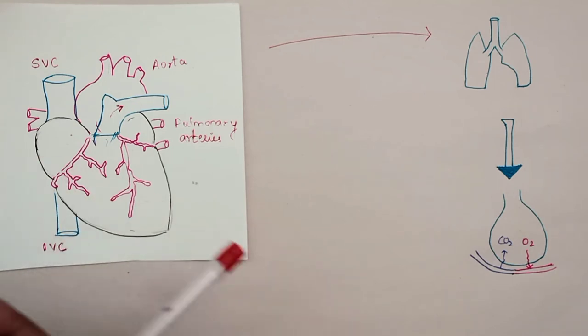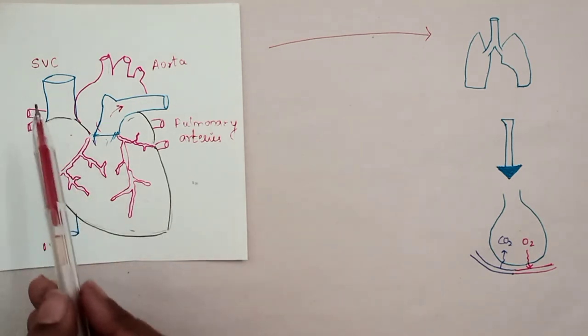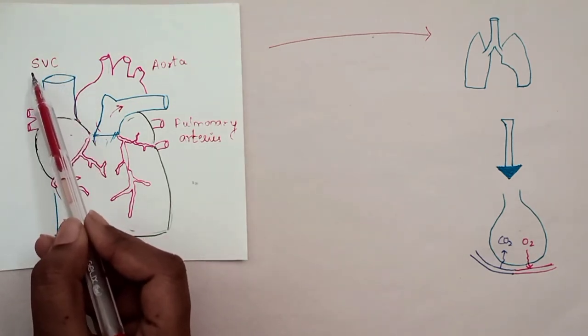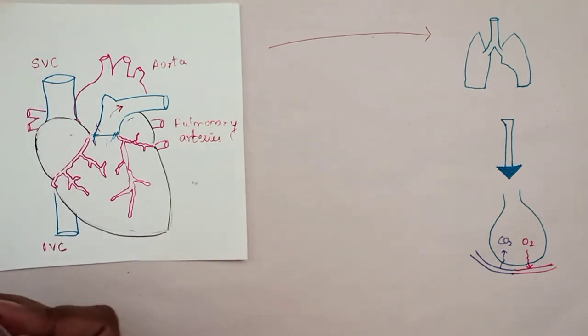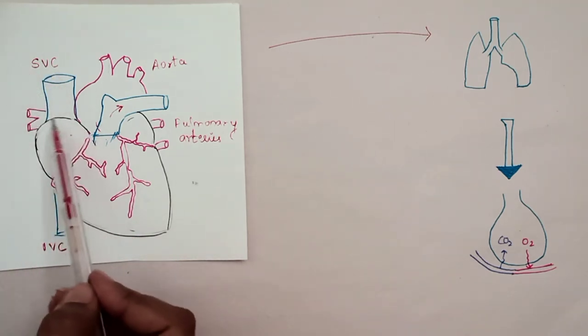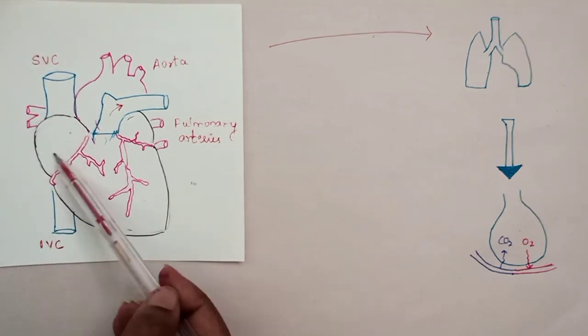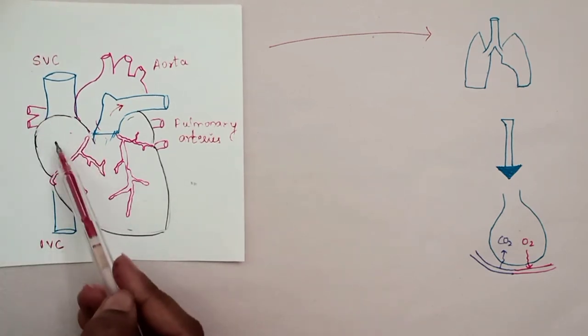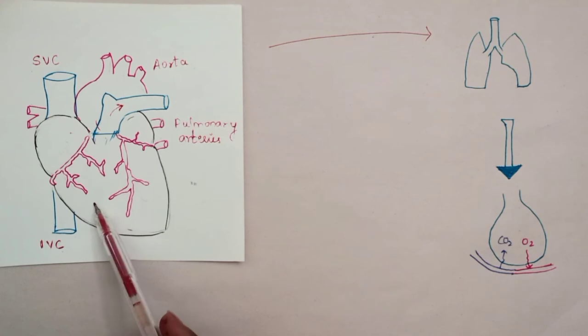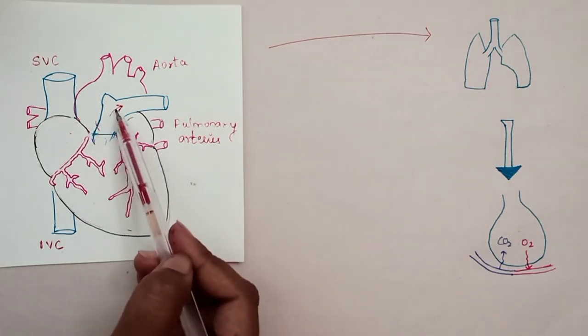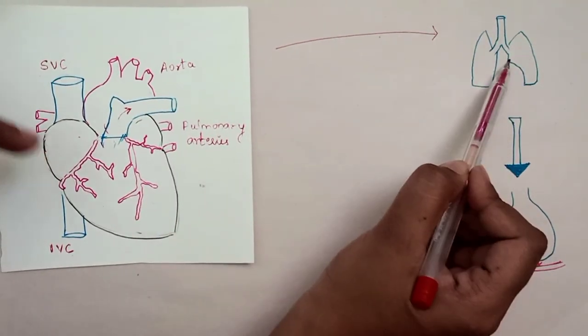How does circulation and gas exchange occur? Deoxygenated blood from the whole body is collected into the right atrium from the superior and inferior vena cava. The blood is then transferred to the right ventricle and goes through the pulmonary arteries into the lungs.